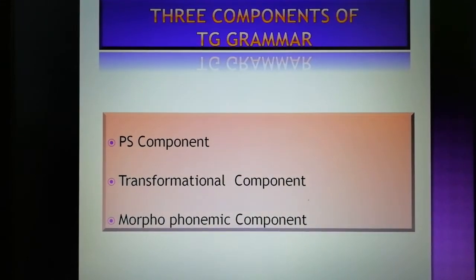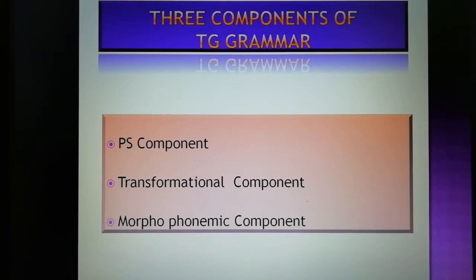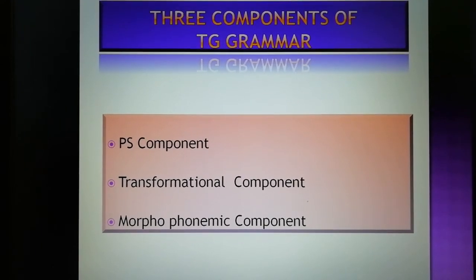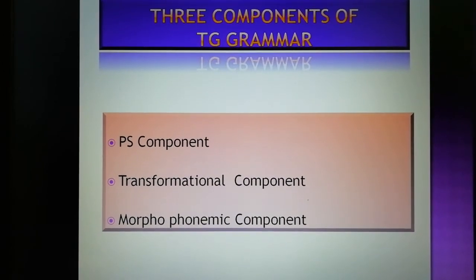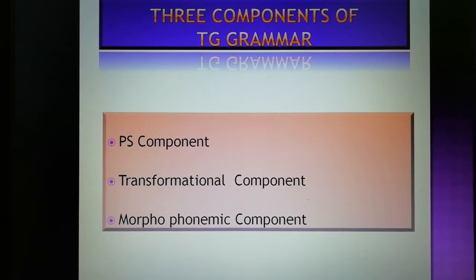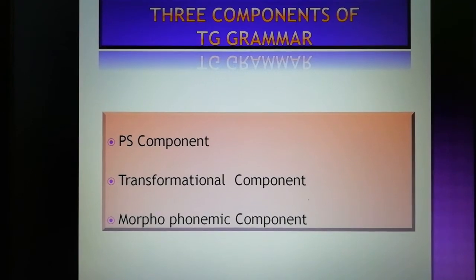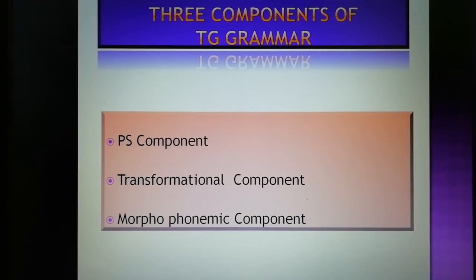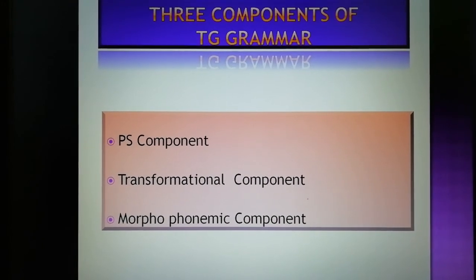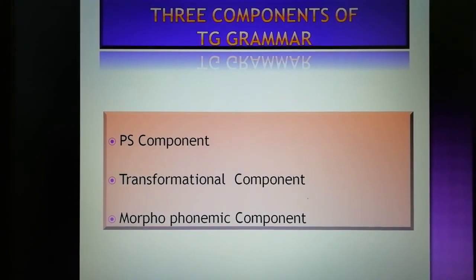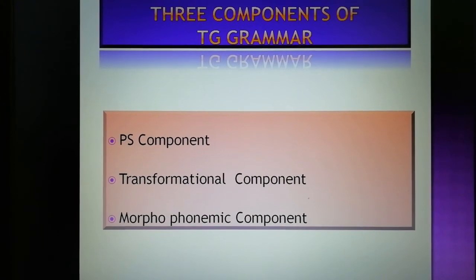TG grammar is meaning-preserving. Sound and meaning are given equal importance. In short, TG grammar attempts to describe a speaker's competence, which enables them to have various skills such as the ability to distinguish between grammatical and ungrammatical word sequences, and the ability to resolve ambiguities, both structural and lexical.